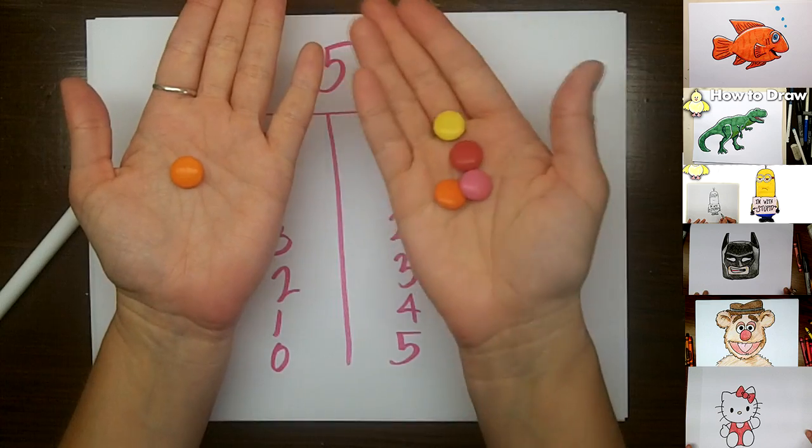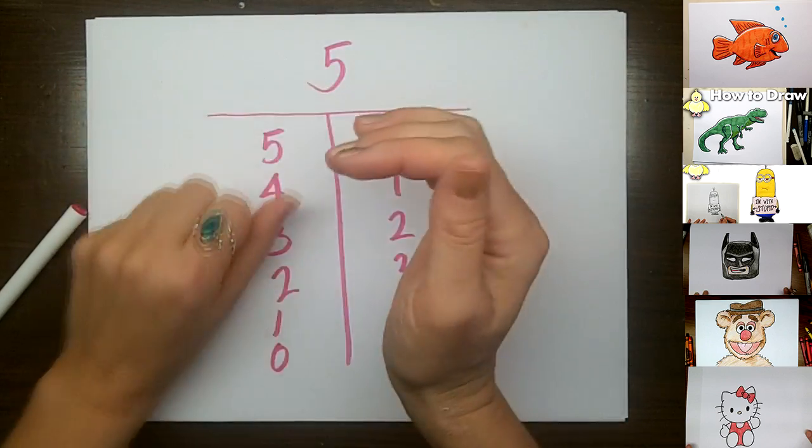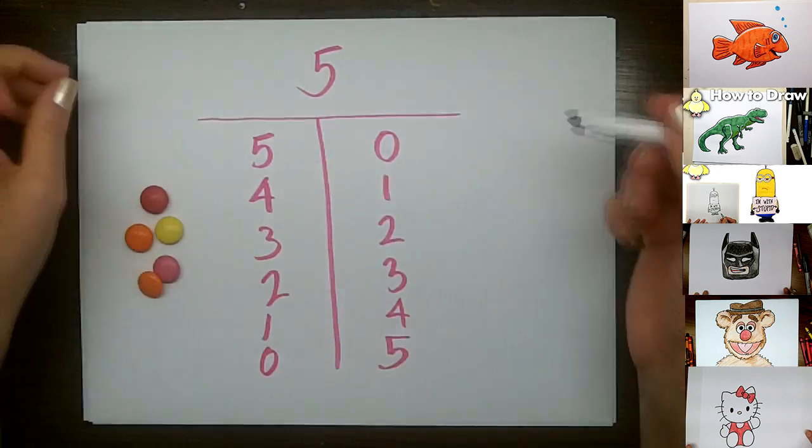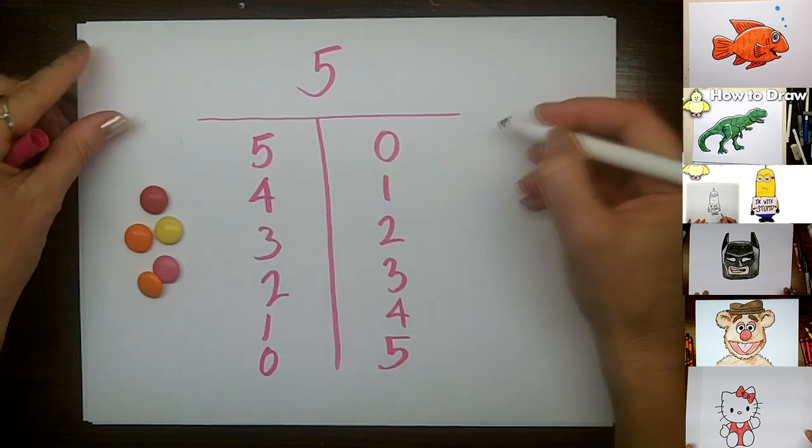Shake them again and now open. I have one in this hand, I must have four in the other. And this is just a natural extension activity where you can start to write the number facts.